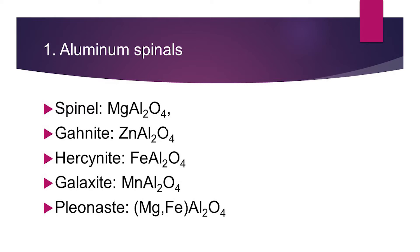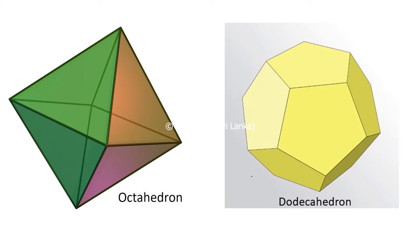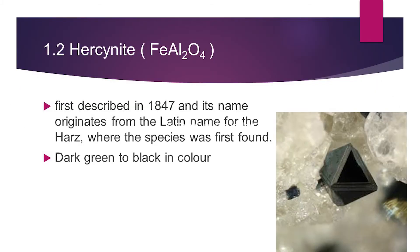In gemology, we are most familiar with spinel as magnesium aluminium oxide. Gahnite is also known as zinc spinel — a blue-violet, dark green to black mineral — and it usually shows an octahedral habit, not a dodecahedral habit, as you can see here. Then there is hercynite.